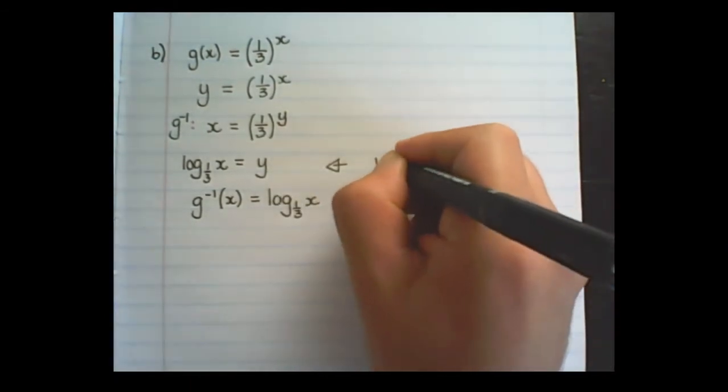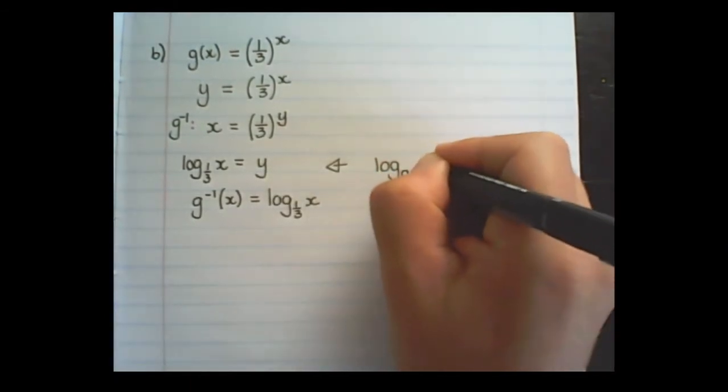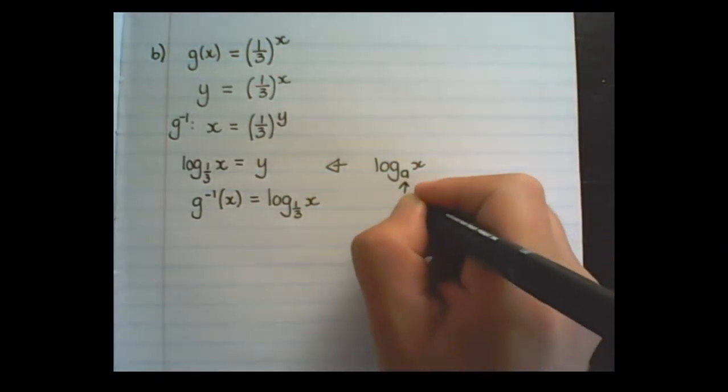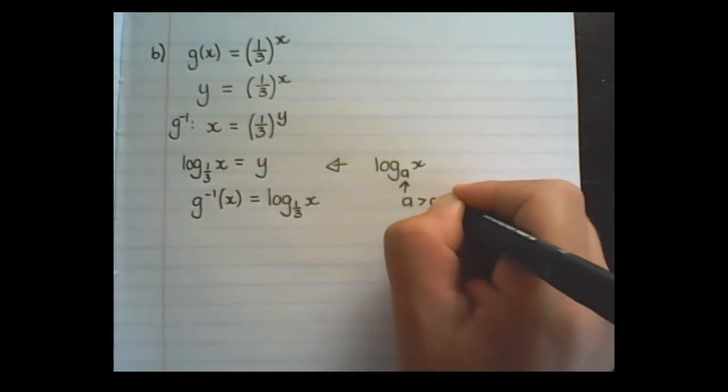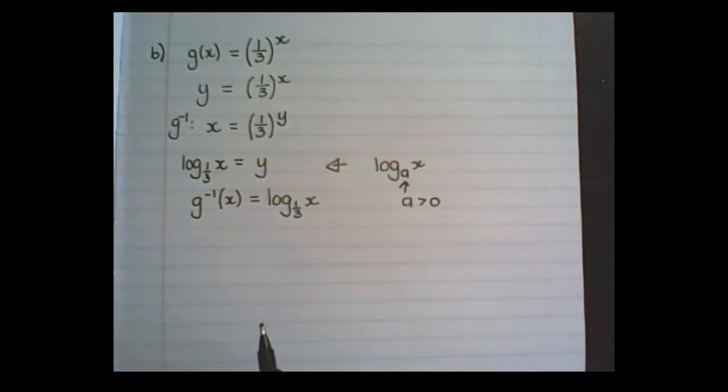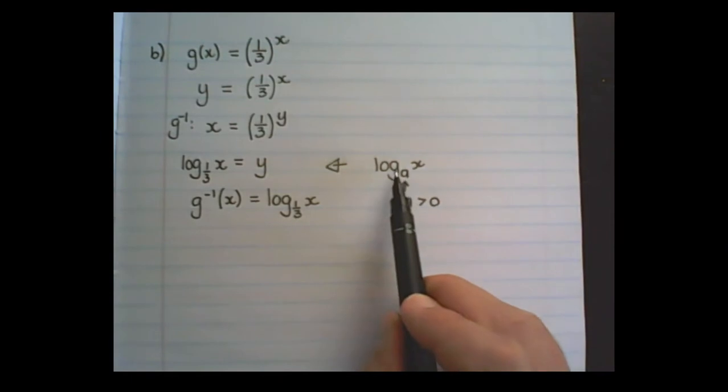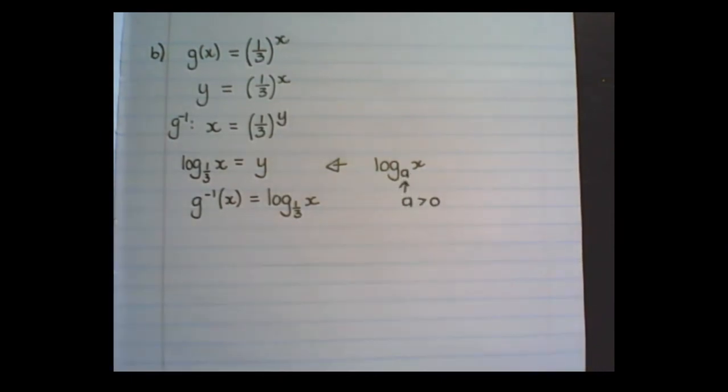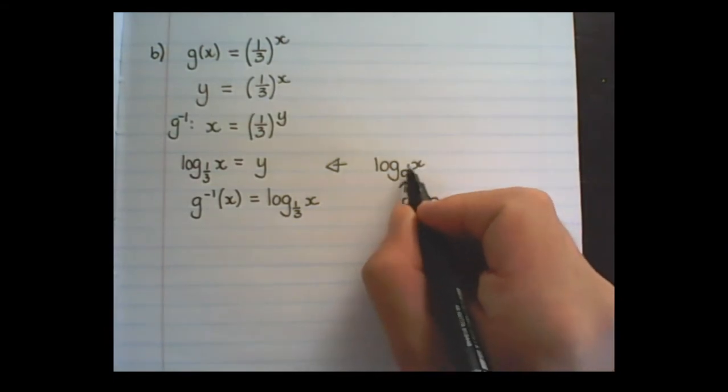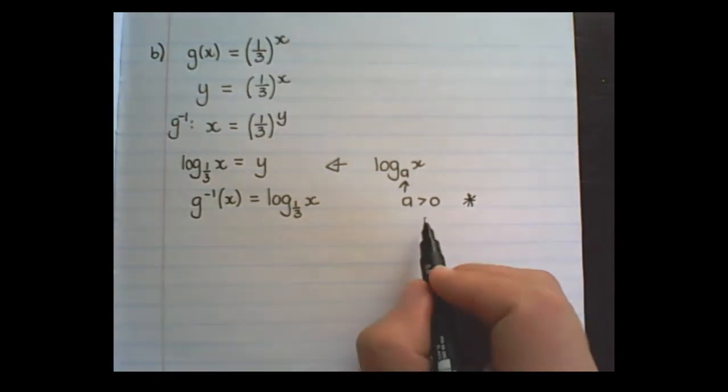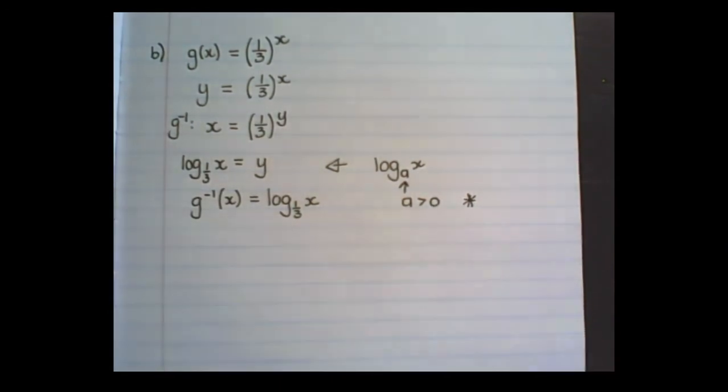As stated in previous lessons, the value of the base in the log must always be positive. And in future lessons, we are going to learn more of the restrictions of this base value. For now, notice that it must always be positive, therefore bigger than zero.